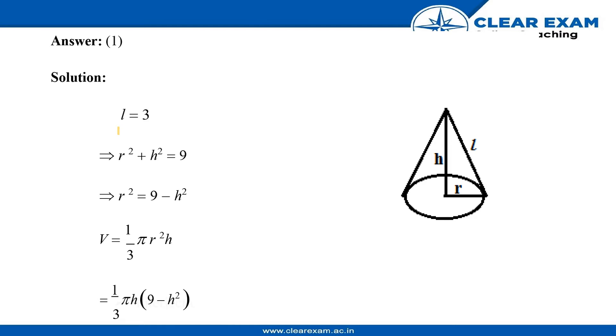slant height of the cone and that is l = 3. And as we know, l² = r² + h², so we will substitute the value and we will obtain this equation.